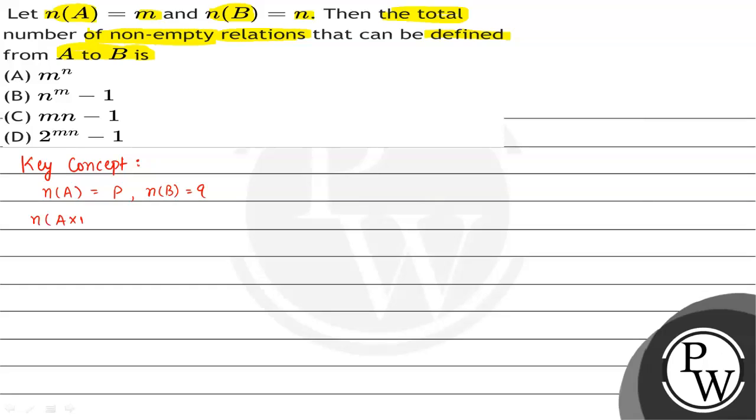The number of elements in A×B is given by n(A) × n(B) = p × q. A relation from A to B is a subset of A×B.